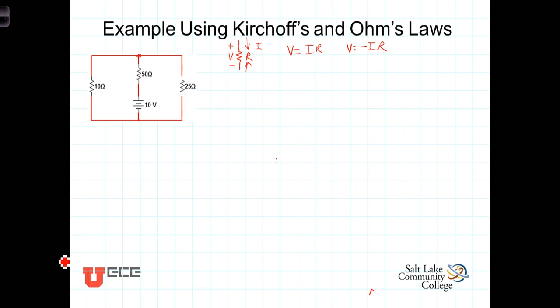So here we go. Looking at this we see that we have two nodes. Thus we'll be able to get one independent node equation. We also see that there are three loops in this circuit, which means that we can get two independent loop equations from this circuit.